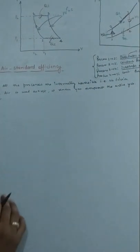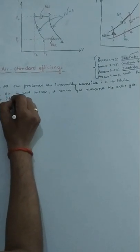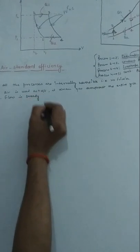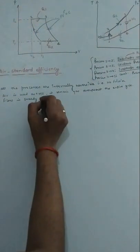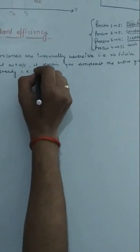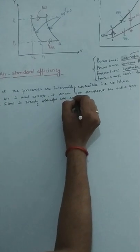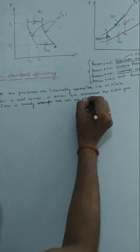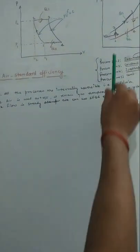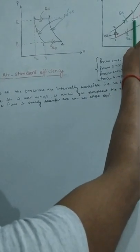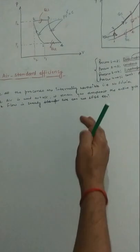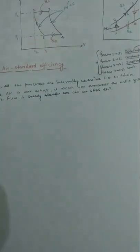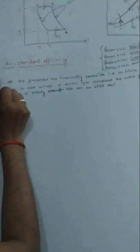Another assumption is that the flow is considered as steady flow. This means we can use the Steady Flow Energy (SFE) equation. All the elements used in the Brayton cycle — like the compressor, combustion chamber, turbine, and heat exchanger or cooler — are open systems. That is why we can apply the SFE equation. These are the basic assumptions made.